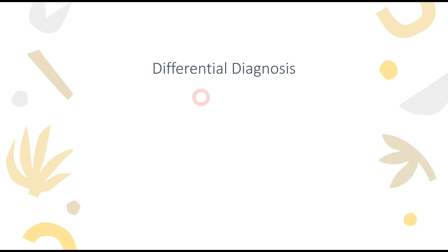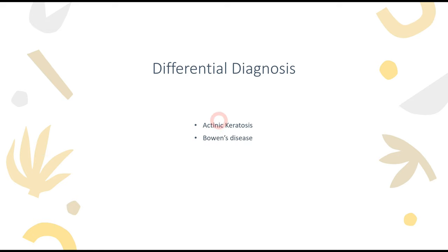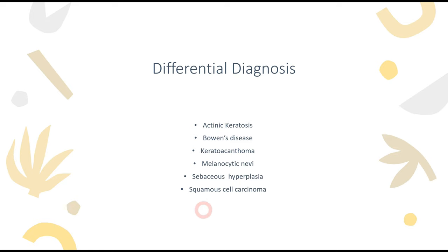Differential diagnosis is a very important part of diagnosing any condition so that you can rule out other possible conditions. For basal cell carcinoma, the differential diagnoses include actinic keratosis, Bowen's disease, keratoacanthoma, melanocytic nevus, sebaceous hyperplasia, and squamous cell carcinoma. You have to rule out these conditions before reaching the diagnosis of basal cell carcinoma.